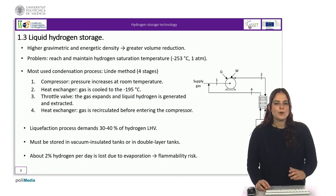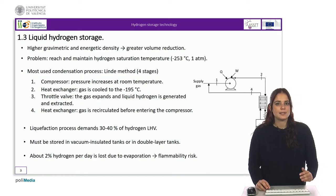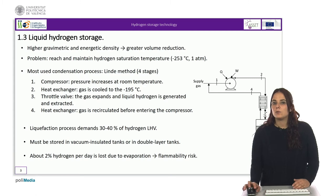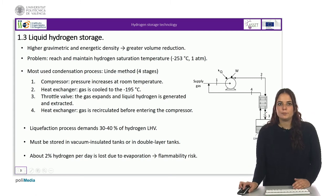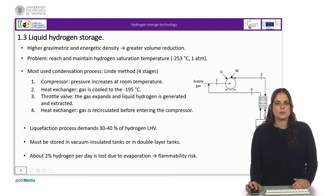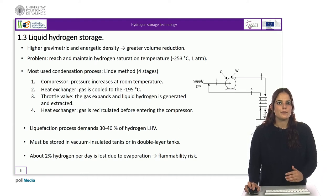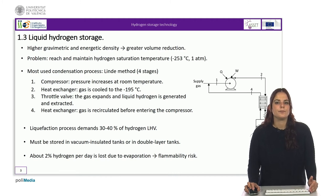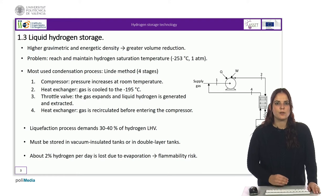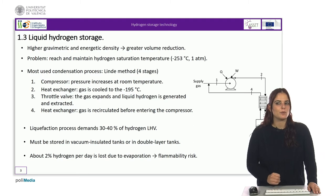The most frequently used condensation process is the Linde method, a simple liquefaction process that we can see in this figure. It requires the supply of hydrogen gas at a low temperature of minus 99.15 degrees Celsius for the system to start operating. This low temperature can be supplied from liquid nitrogen, which is found at minus 195 degrees Celsius at atmospheric pressure, obtained in an auxiliary plant.